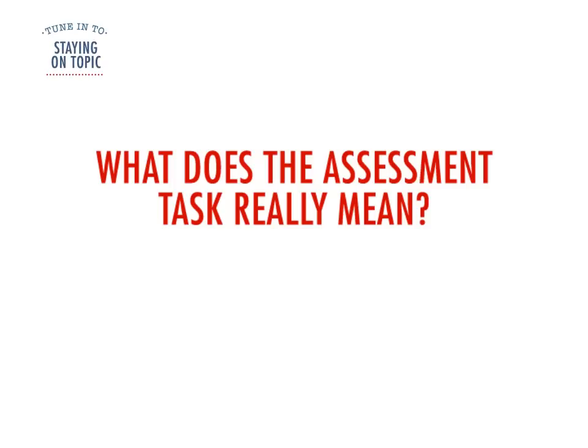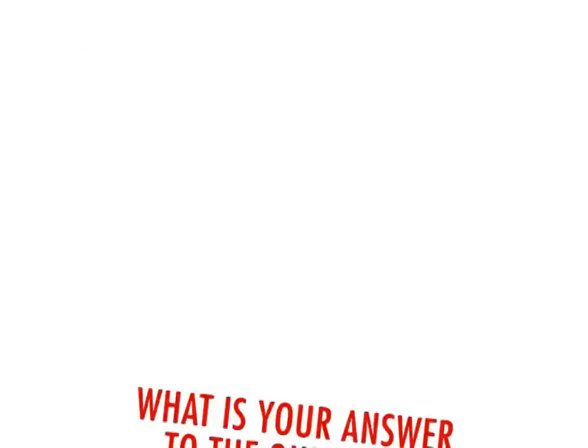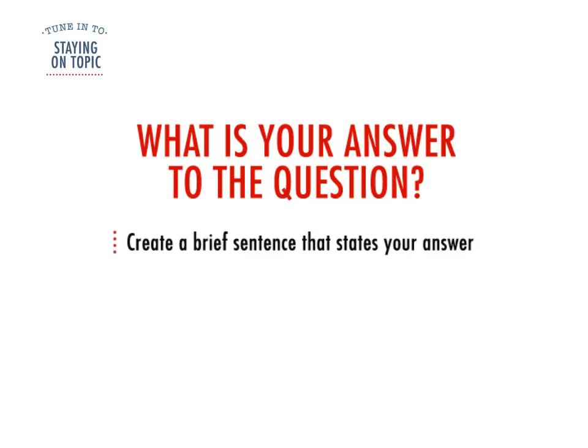Firstly, make sure you know exactly what the task involves. Take some time to think about the task you have been set and to organise your thoughts. For tips on how to do this, see our video Understanding the Assessment Task. After doing some research, decide what your answer to the task will be. Make it into a sentence that states your answer. This sentence will be the main argument of your essay — you should always relate back to it. A tip is to use the content words from the task in your sentence and throughout the essay. This shows the reader that what you're writing is directly related to the task.